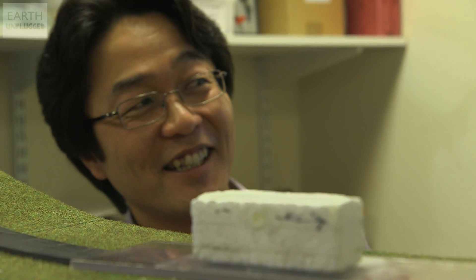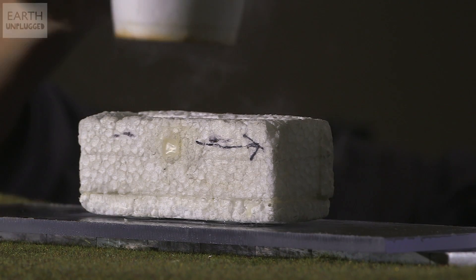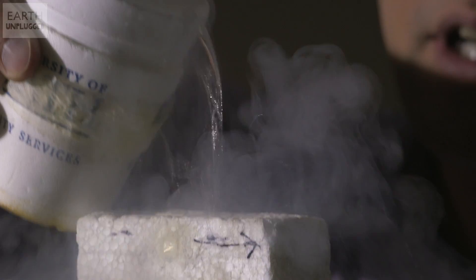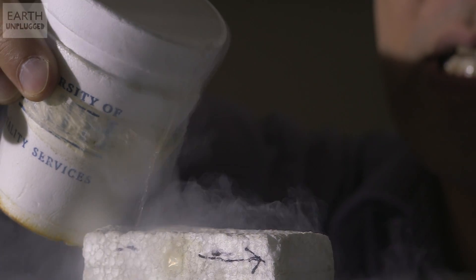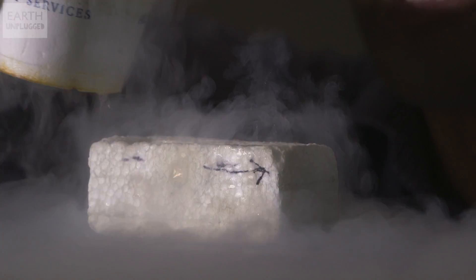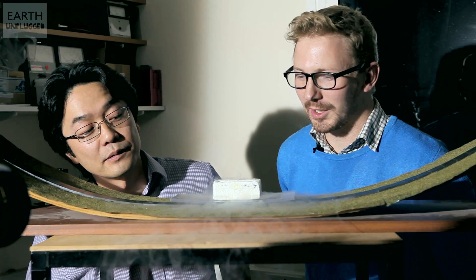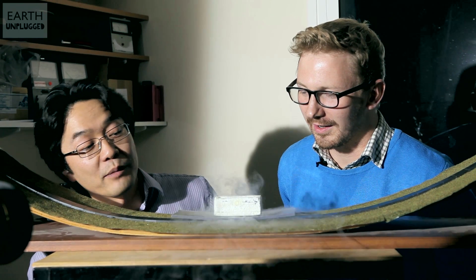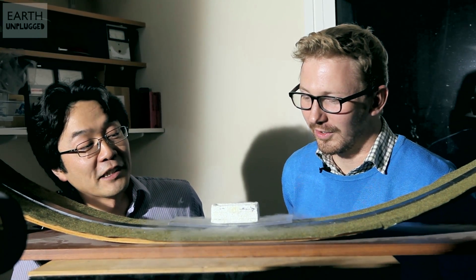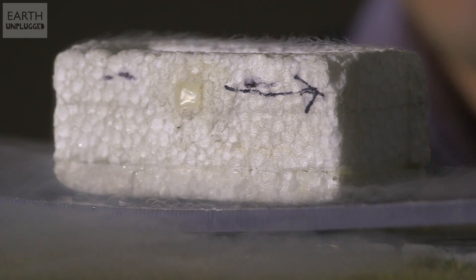Okay, so this is liquid nitrogen. How cold is that? It's 77 Kelvin above absolute zero. That's just boiling while it's getting down to temperature. When the boiling settles down you know that it's almost there.